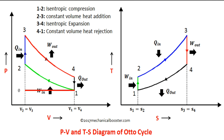The TS diagram is a common tool in thermodynamics that helps to visualize heat transfer during a process. The area under the curve on a TS diagram represents the heat interaction. The TS diagram for the Otto cycle shows the following processes: 1 to 2 compression, which is isentropic; 2 to 3 heat addition, which is isochoric; 3 to 4 expansion, which is isentropic; and 4 to 1 heat rejection, which is isochoric.